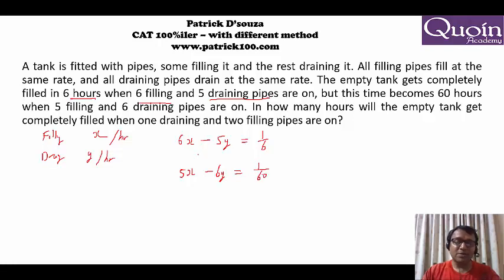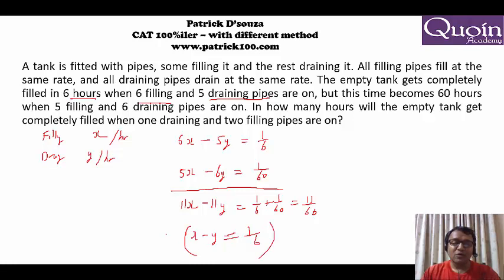Normally I am not for equations but this is one of the sums which I am looking at equations. Directly you can add it up. So you will get 11X minus 11Y is equal to 11 by 60. So automatically you get X minus Y as 1 by 60. Now to find X and Y I can multiply this equation by 5 which will give me 5X minus 5Y equal to 5 by 6.